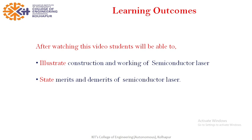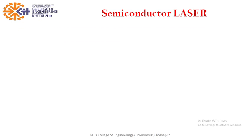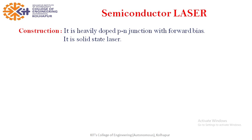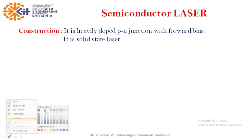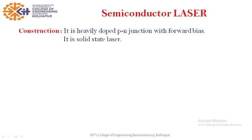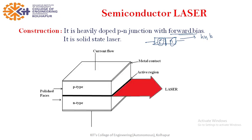First we shall see what is the construction of semiconductor laser. A semiconductor laser is a heavily doped P-N junction with forward bias. P-type semiconductor is joined to N-type semiconductor to get the P-N junction. It is heavily doped — meaning the doping concentration is very high — and it is forward biased.